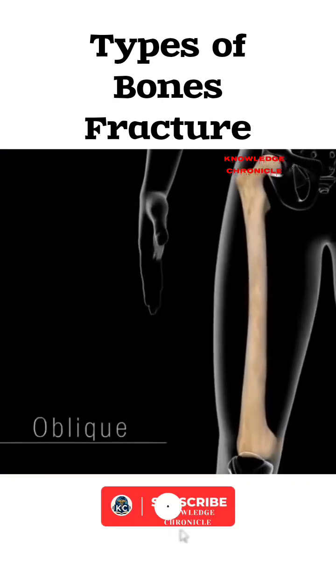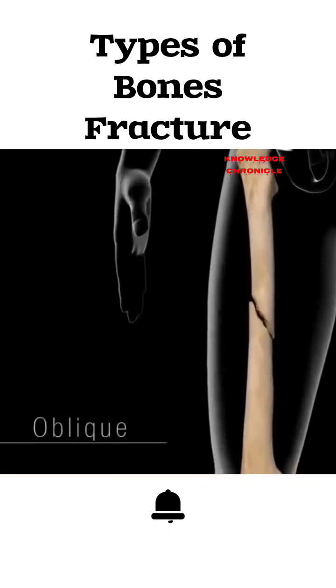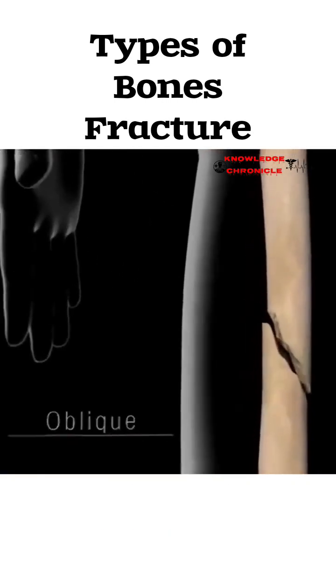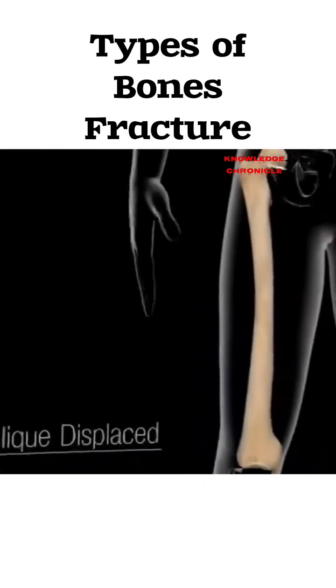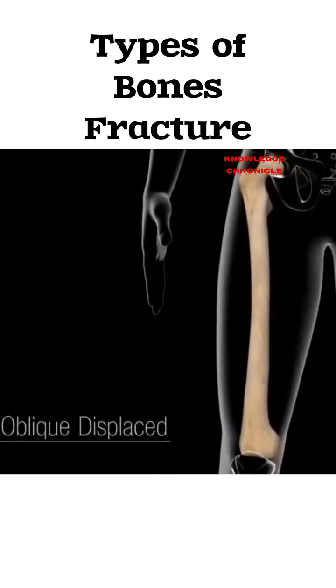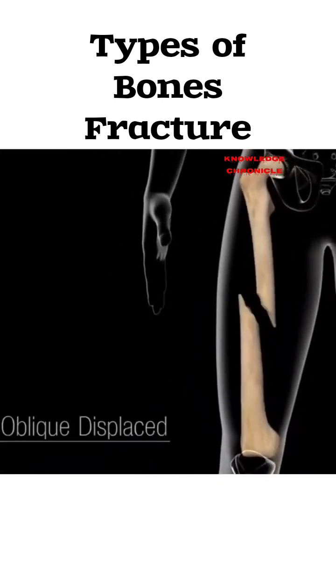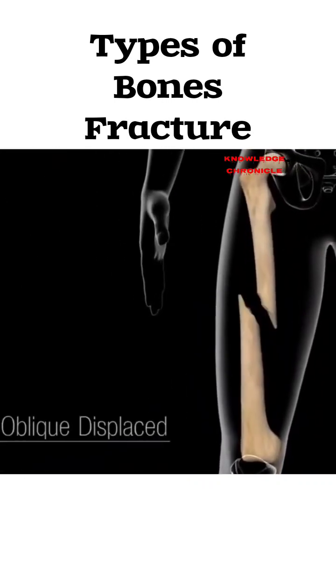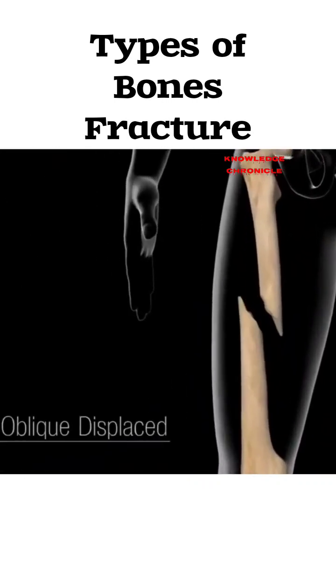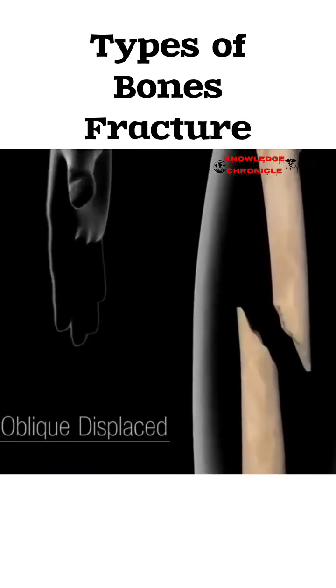Oblique fracture: imagine a diagonal break across the bone — it's not straightforward, quite literally. Oblique displaced fracture: like an oblique fracture, but the pieces aren't lined up anymore. Think of mismatched pieces of a puzzle.